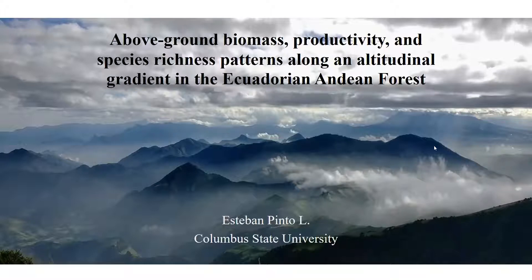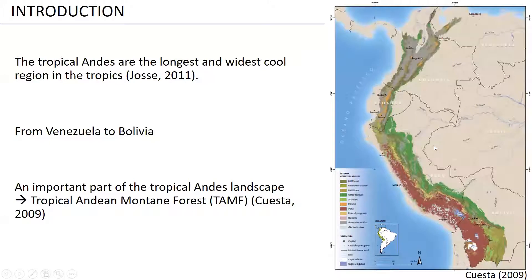The tropical Andes constitute the longest and widest cool region in the tropics. They extend without interruptions from the north in Venezuela to the south in Bolivia. An important part of the tropical Andes landscape are the tropical Andean Mountain Forests.